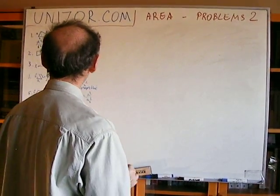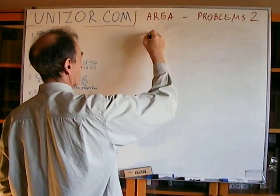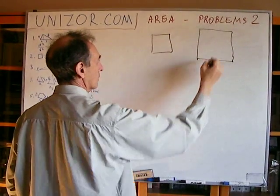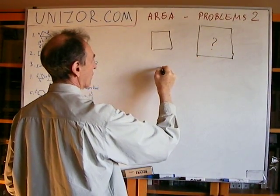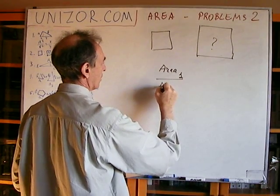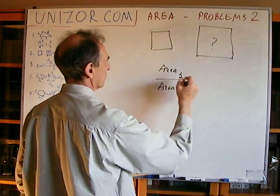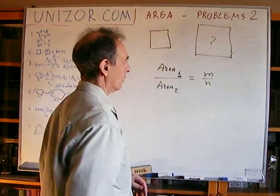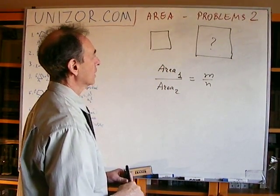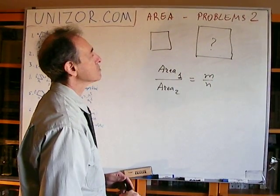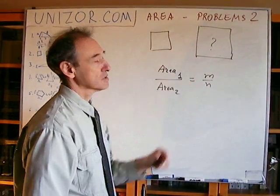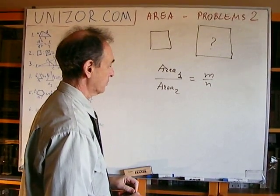Next: you have a square and you have to construct another square so that the area of the first one relates to the area of the second one as m over n, where m and n are given numbers. This square number one is given, so we have to construct square number two which has the area proportional to this one using this ratio of proportionality.